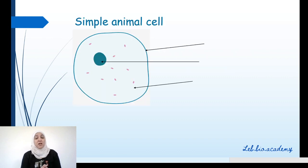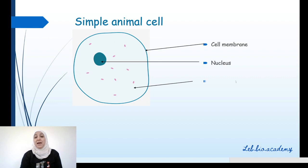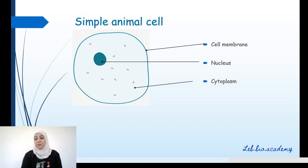We are going to start by labeling a very simple animal cell. The part outside is called a cell membrane, the small part inside is a nucleus, and the fluid all around the nucleus is the cytoplasm.